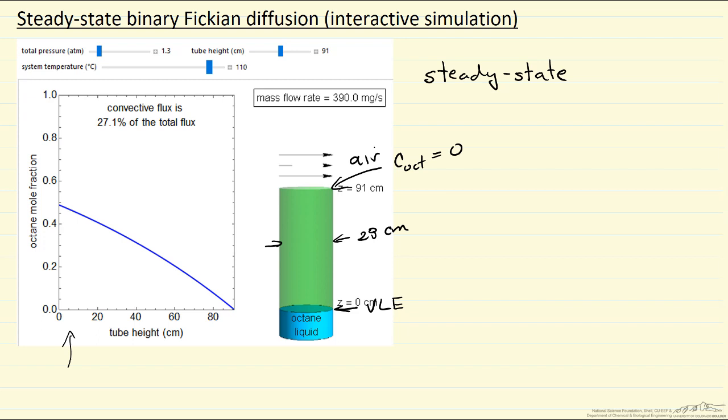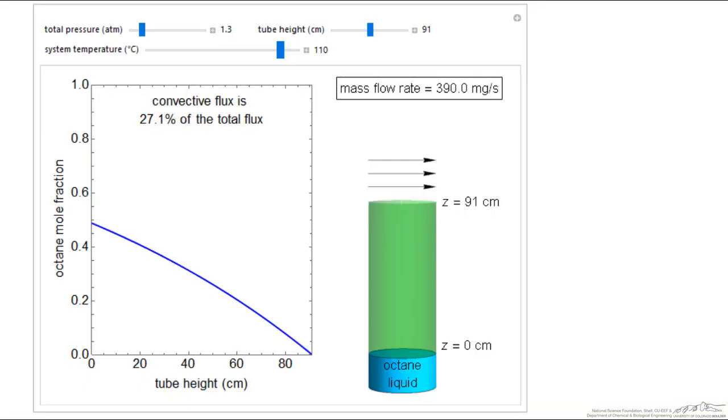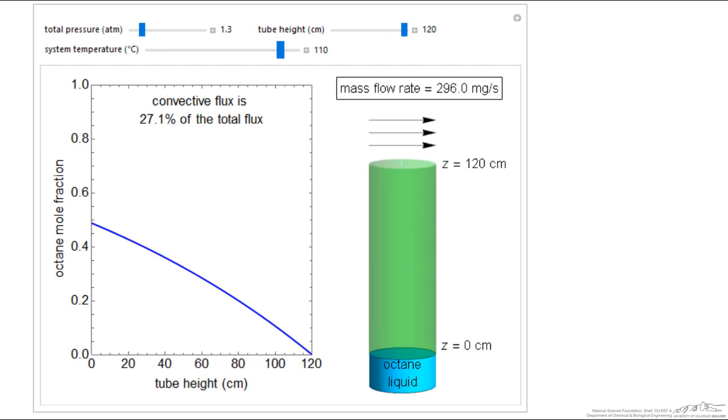So let's look at the simulation. Here's the interactive simulation. You can see as we increase the height of the tube, we decrease the flux. As I lower the temperature, the flux goes down pretty dramatically.